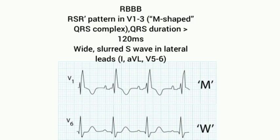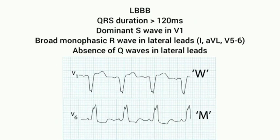This is RBBB — right bundle branch block. There will be an M pattern or RSR pattern in V1 and V3, and wide slurred S wave and W pattern in lateral leads.